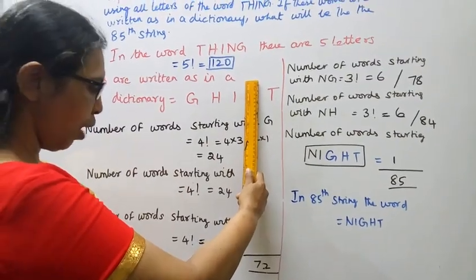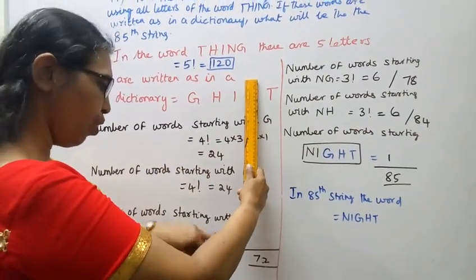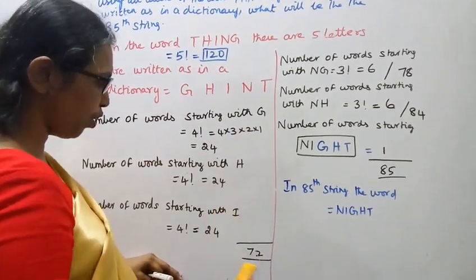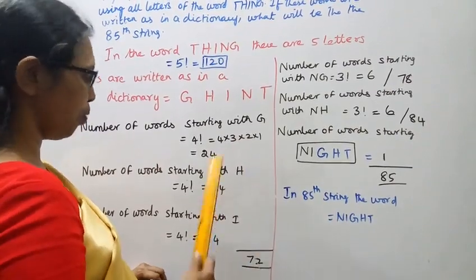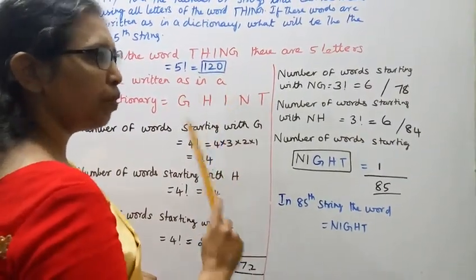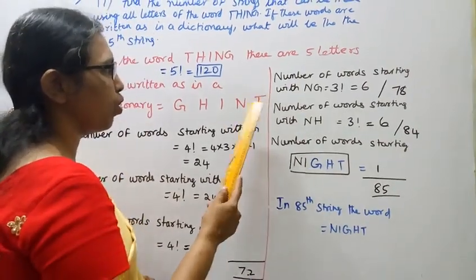24, 24, 24 gives 96. So within those 24, we have 72 strings covered. Then we need to step further.